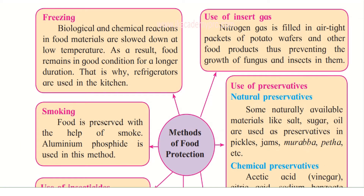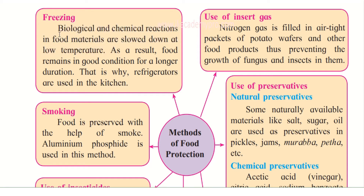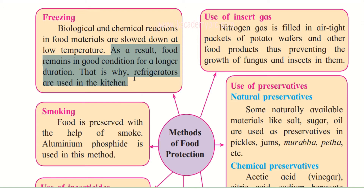Let us learn about the various methods of food protection. The first method is freezing. Biological and chemical reactions in food materials are slowed down at lower temperatures, therefore we use the freezing method — we keep food in refrigerators. As a result, food remains in good condition for a longer duration. That is why refrigerators are used in kitchens, and there are also large refrigerators where food has to be stored on a bigger scale.